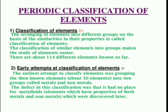Early Attempts at Classification of Elements. The earliest attempt to classify elements was grouping the then known elements — about 30 elements — into two groups called metals and non-metals. The defect in this classification was that it had no place for metalloids, which have properties of both metals and non-metals, and were discovered later.